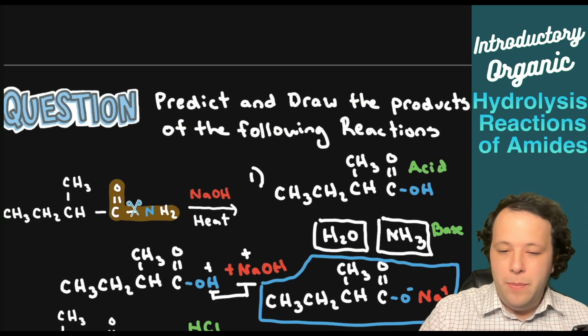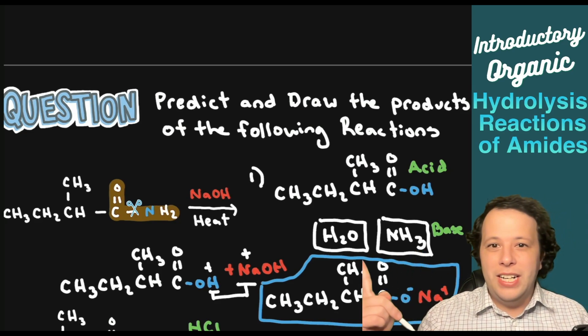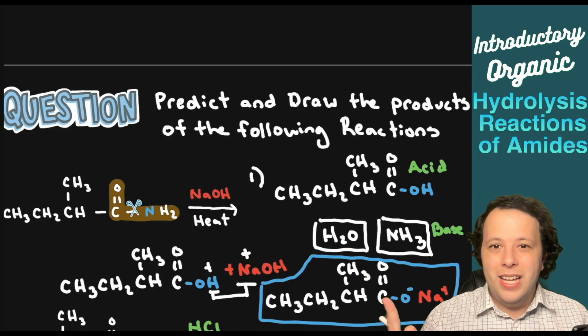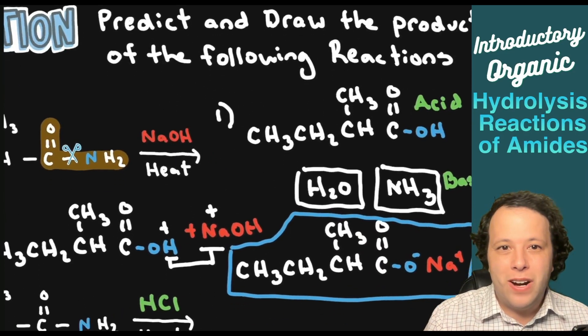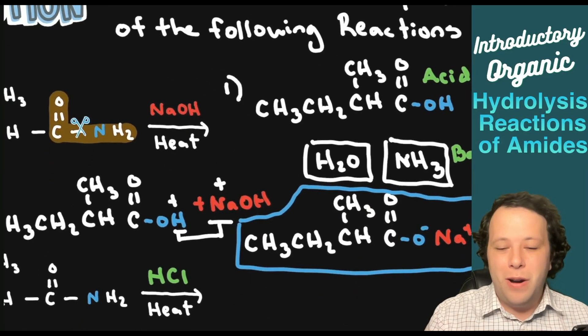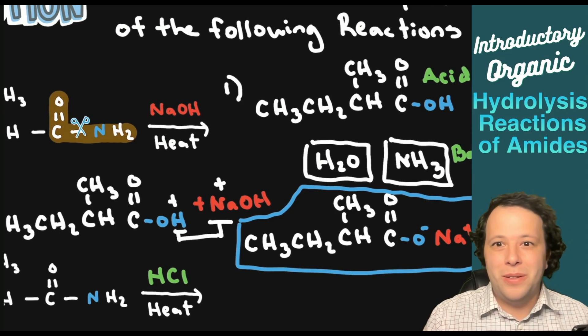So we have our carboxylate salt, and we also made water as a product. We made ammonia gas, H2O, and our carboxylate salt — all these different products from this particular reaction.